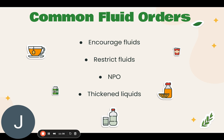There are some fluid orders you may see in the hospital or facility. Encourage fluids means the person needs to drink an increased amount of fluids, used to treat or manage dehydration, UTIs, and kidney stones. Restrict fluid means fluids are limited to a certain amount, used to manage edema, kidney failure, and heart failure. NPO, or nothing by mouth, means the person cannot eat or drink anything — used before surgery and some diagnostic tests. Thickened liquids means water and fluids are thickened by the dietary department, used for patients who have difficulty swallowing.